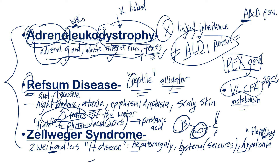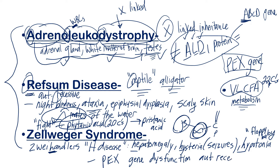The cause of Zellweger syndrome is generalized PEX gene dysfunction. This one is also autosomal recessive.